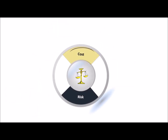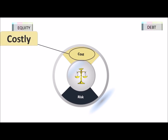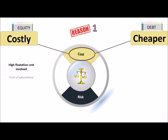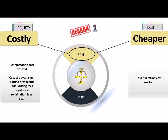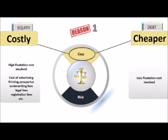Let us first start with cost. If we compare equity and debt, equity is considered costly whereas debt is cheaper. Reason one: equity involves high flotation cost whereas debt involves less flotation cost. Flotation cost includes the cost involved in advertising, printing of prospectus, underwriting fee, and other legal formalities related to issue of securities.